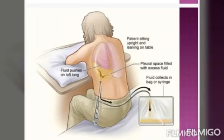In this picture, you can see a patient undergoing Thoracocentesis. The patient is sitting in an upright position leaning on the table. The pleural space is filled with excessive fluid affecting the left lung. To remove this fluid, Thoracocentesis is performed by puncturing the chest wall with a needle into the pleural space, and fluid collects in a bag or syringe.